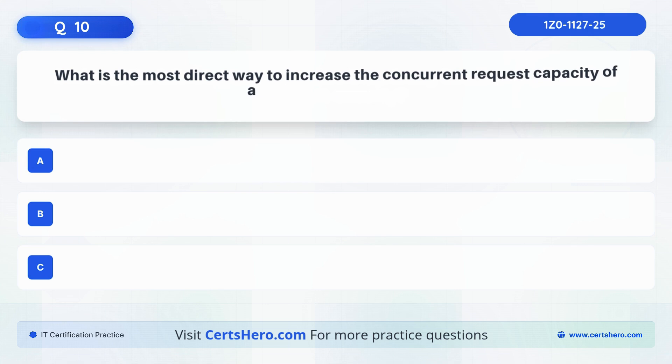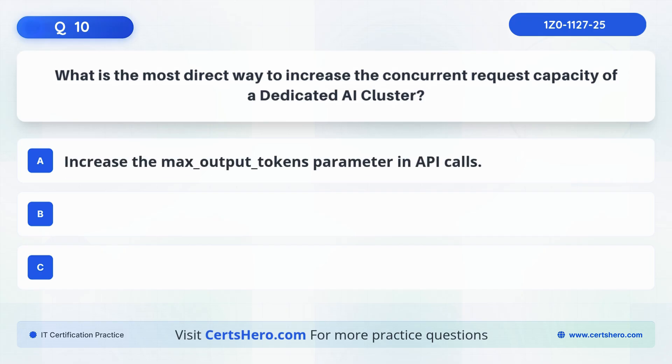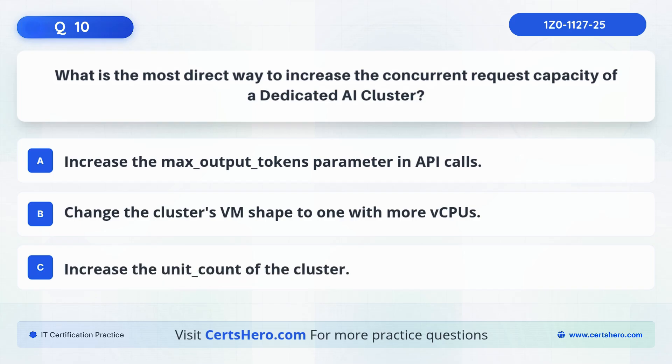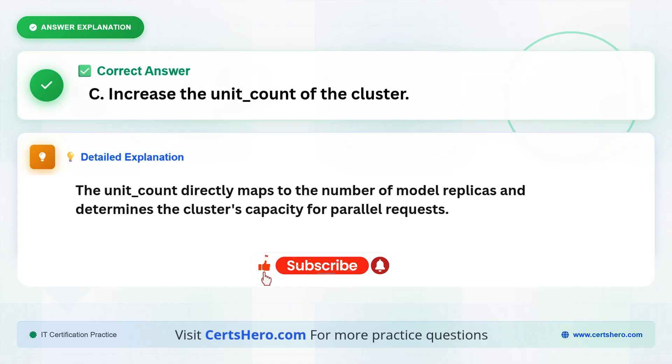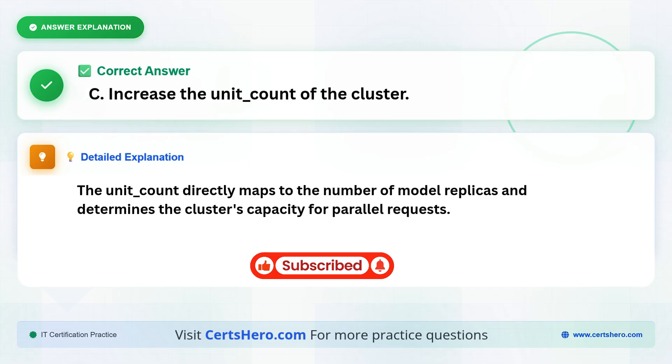Question 10. What is the most direct way to increase the concurrent request capacity of a dedicated AI cluster? Is it to increase the max output tokens parameter in API calls, change the cluster's VM shape to one with more VCPUs, or increase the unit count of the cluster? The correct answer is C, increase the unit count of the cluster. The unit count directly maps to the number of model replicas, and determines the cluster's capacity for parallel requests.